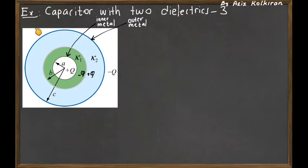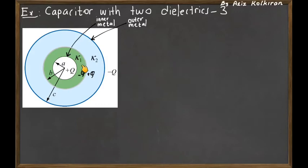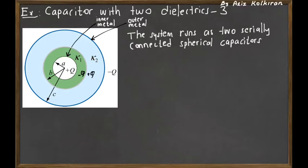We look at the cross section of this spherical capacitor and put a very thin metal shell between the two dielectric materials. There will be no difference because there will be no potential difference between k1 and k2 right at the border. When you put this metal shell, the inner surface will accumulate minus q charge and the outer surface will accumulate plus q charge, because of the electric field inside k1 and k2.